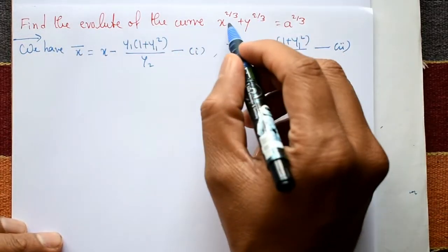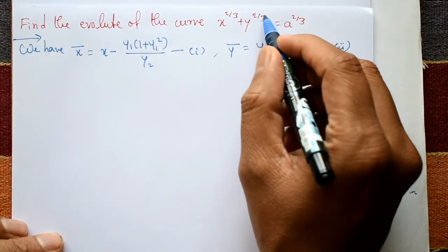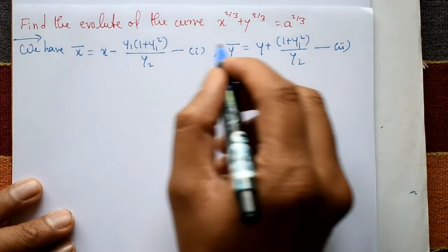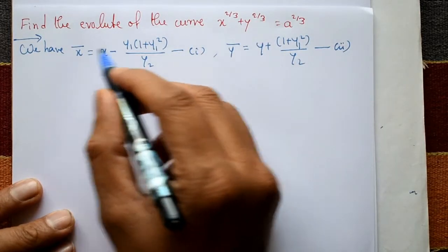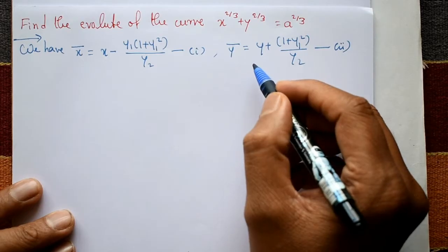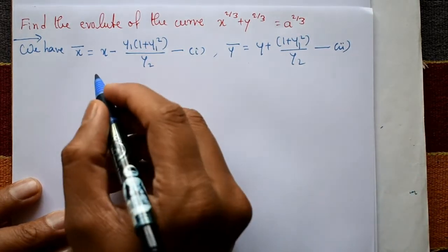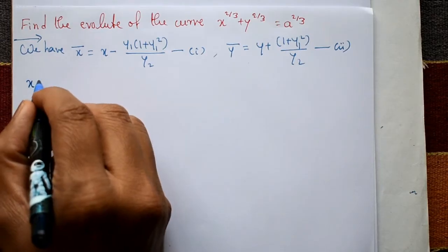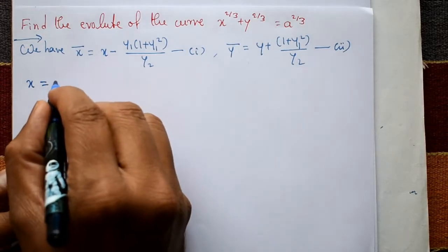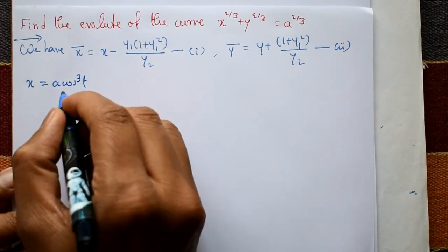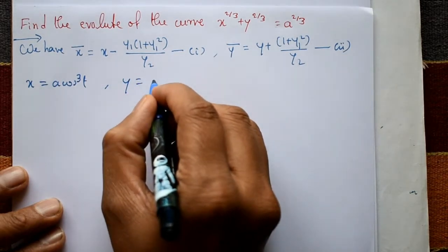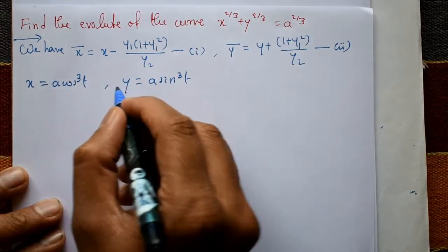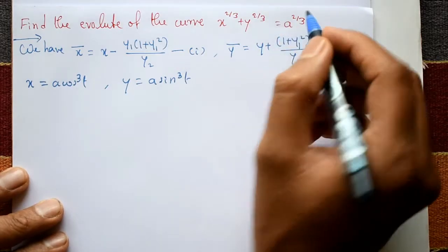Find the evolute of the curve x^(2/3) + y^(2/3) = a^(2/3). This is straightforward — we find x̄ and ȳ using equation number 192. First, consider the parametric equations: x = a·cos³(t) and y = a·sin³(t).